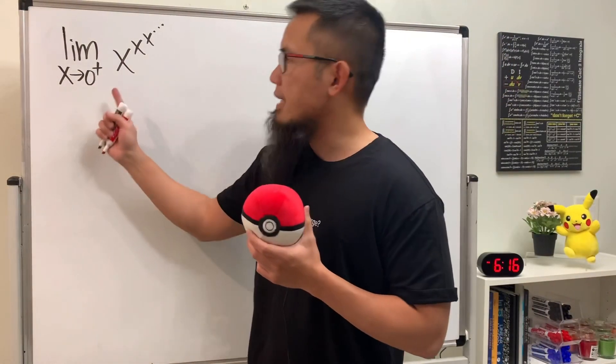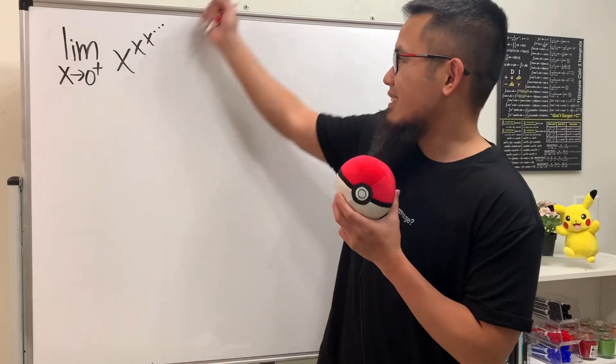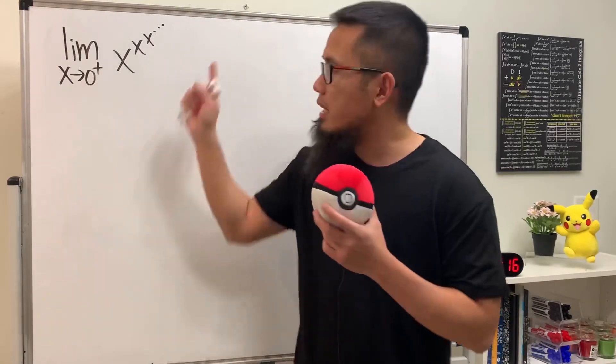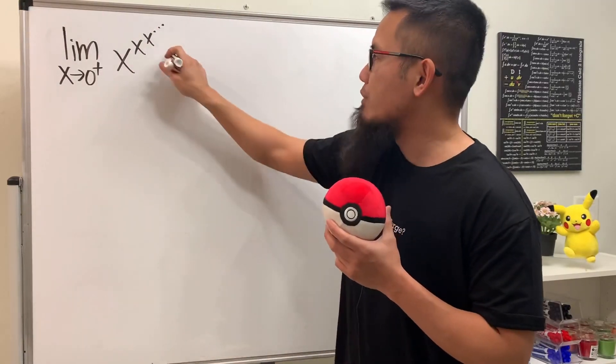What's the limit as x goes to zero plus, where we have x to x to x infinitely many times? The truth is, this is also a limit.